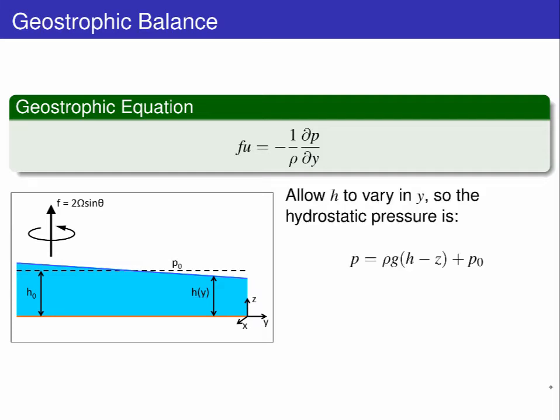The hydrostatic pressure in the domain is a function of the water depth h and the atmospheric pressure p0. We can differentiate the hydrostatic pressure equation in y to get an expression for the change in pressure in the y direction.